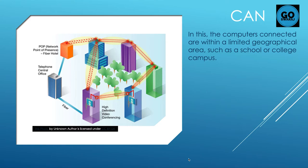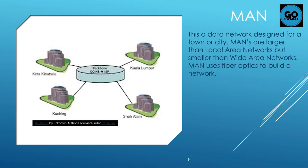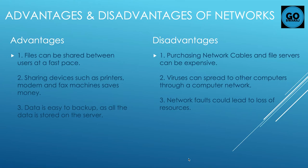CAN: computers are connected within a limited geographical area such as a school or college campus. MAN: this is a data network designed for a town or city. MANs are larger than local area networks but smaller than wide area networks. MAN uses fiber optics to build a network.